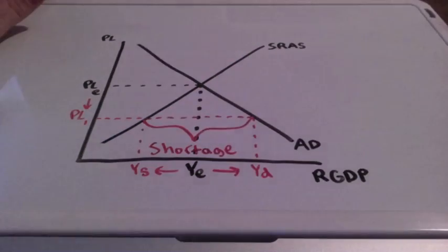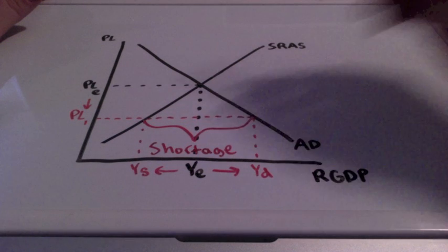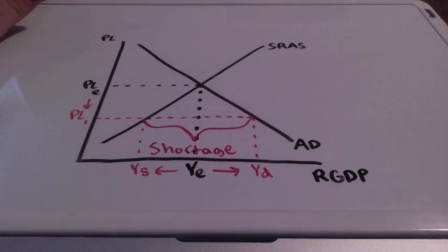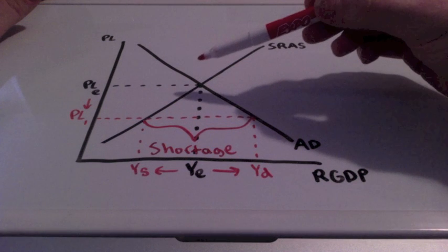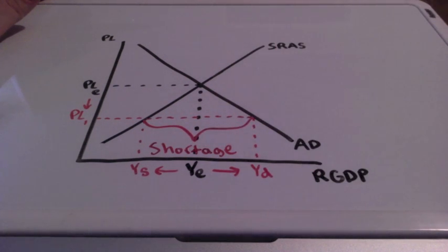The excess demand of goods and services is what we see in this example. Inventories are well below the intended levels.